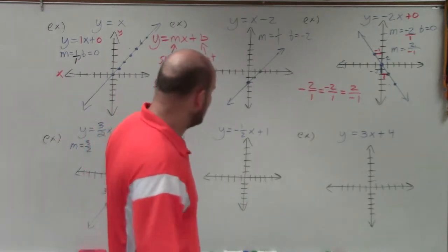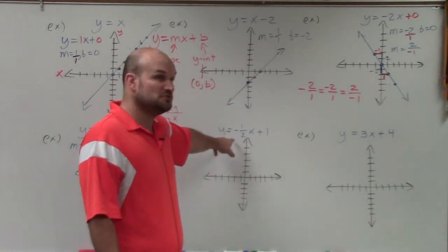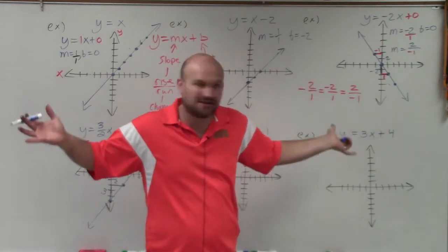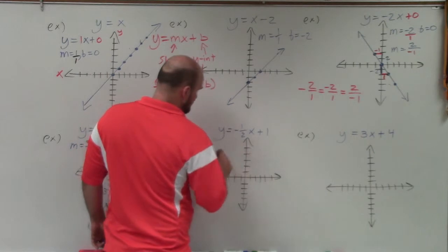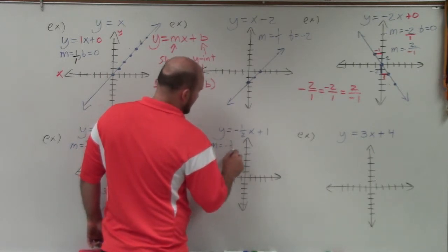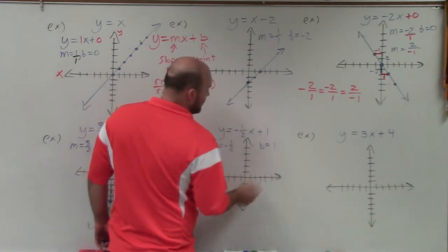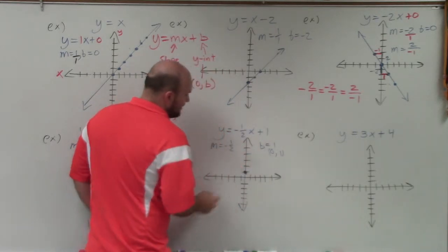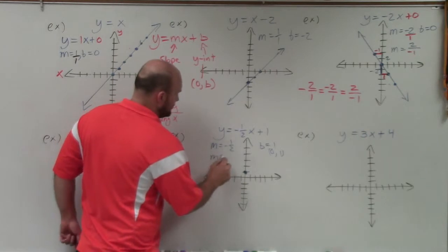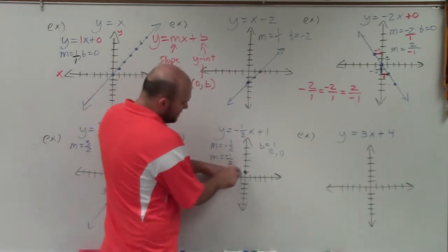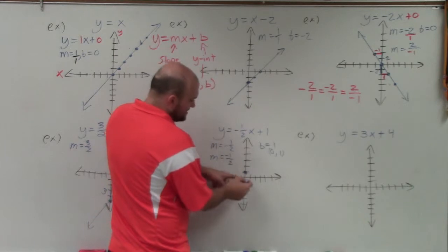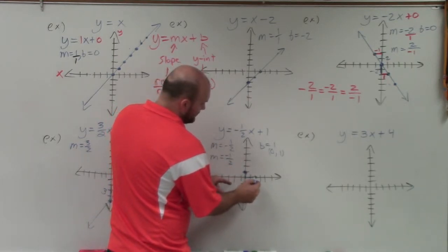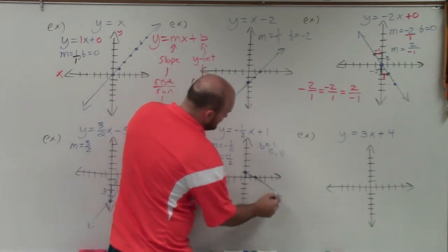In the next example, the negative is in front, so determine whether to put it above or below — it doesn't matter, just pick. Our m equals negative 1 half and b equals 1, so the y-intercept is (0, 1). I'll put the negative in the numerator: change in y is negative 1, so go down 1, and change in x is positive 2, so go over 2. Then connect the two points.